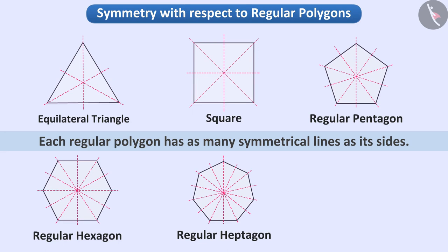So, how many symmetrical lines can be drawn in a regular octagon? Exactly! Eight symmetrical lines can be drawn in it.